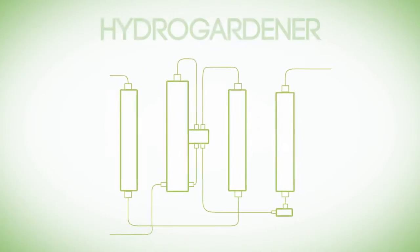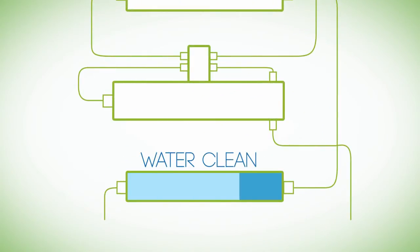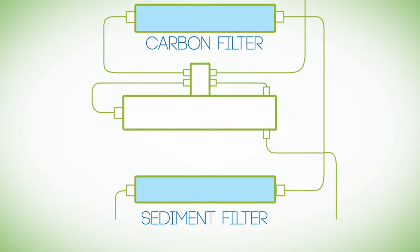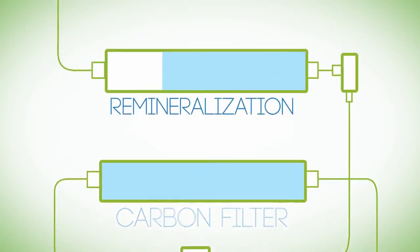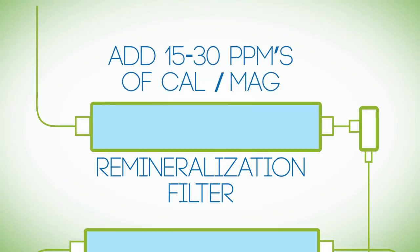The HydroGardener delivers pH balanced mineral water on tap by first stripping the water clean, removing 98% of contaminants using the reverse osmosis process, sediment and carbon filtration. It then channels the water through our advanced remineralization system to add 15 to 30 parts per million of CalMag.